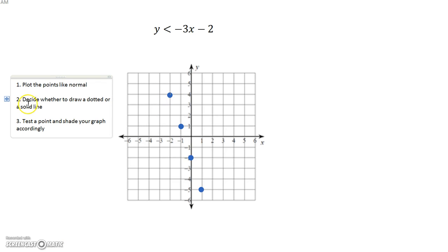Our next step is deciding whether to draw a dotted or a solid line. Now if you look at our inequality sign up here, it's just plain less than, so it's going to be a dotted line.